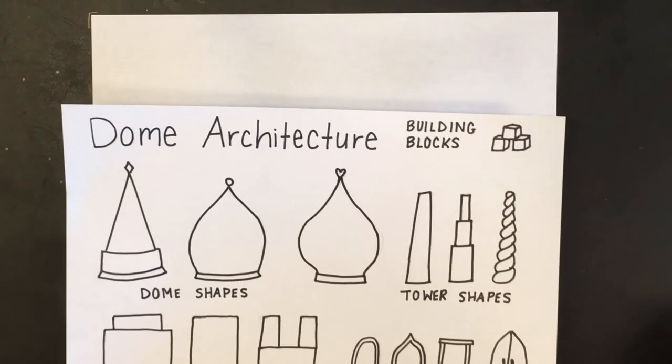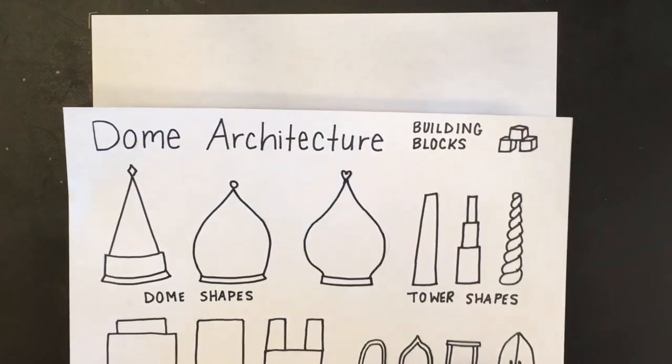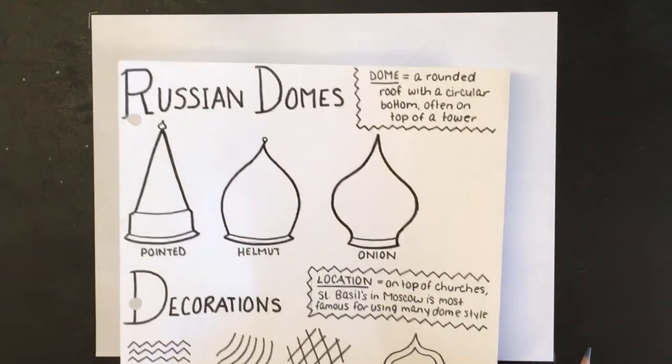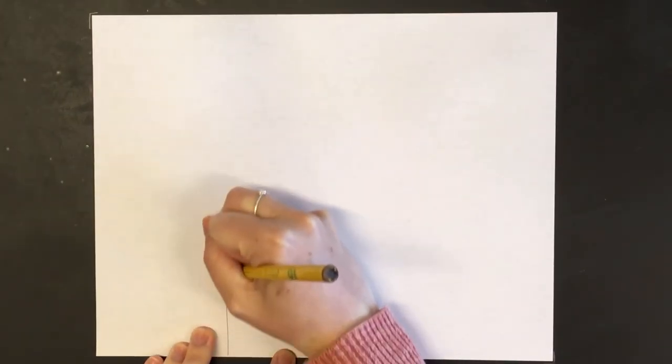On Google Slides I put some worksheets for you to reference. You'll find two worksheets—one says dome architecture and shows different shapes, and the other says Russian domes with shapes you can look at. I'm going to start off by drawing simple basic shapes like rectangles and squares, and you can pick whatever shapes you would like.